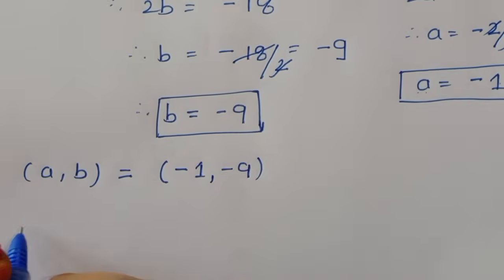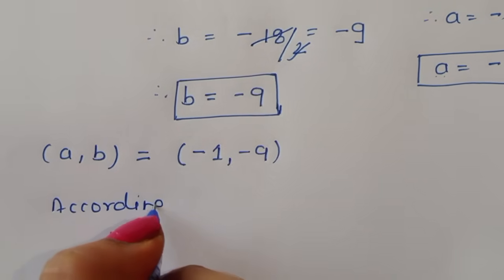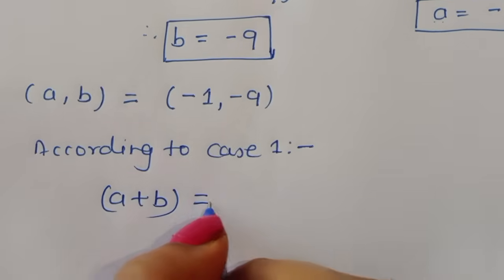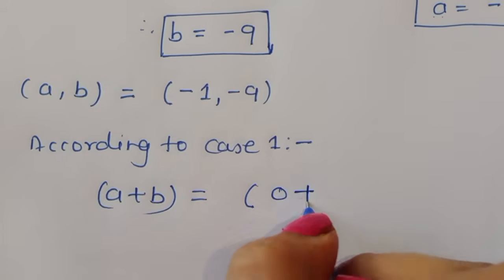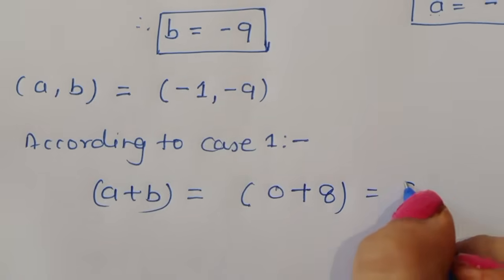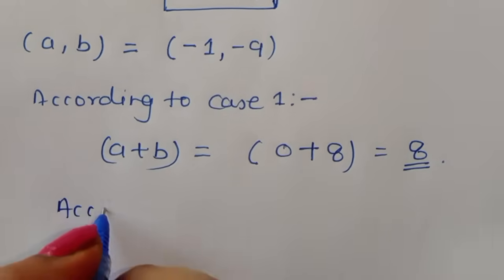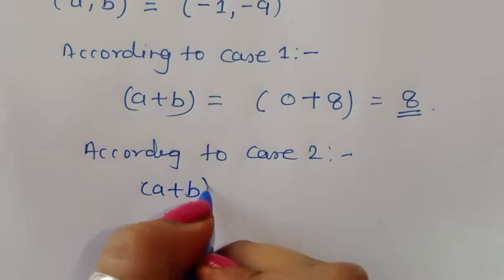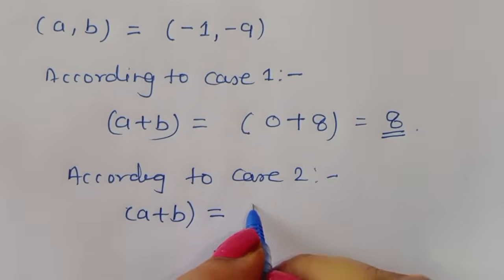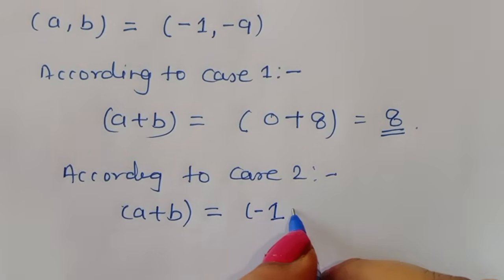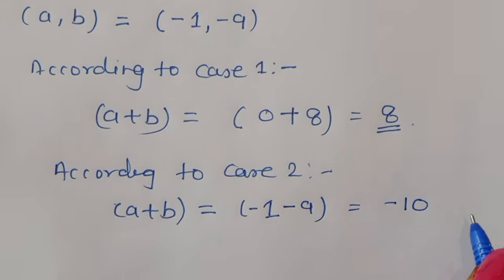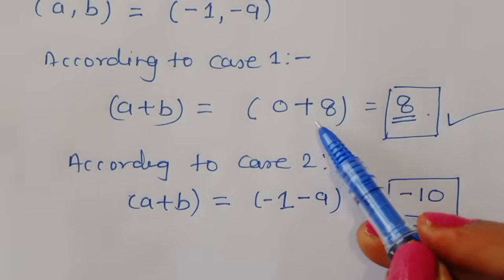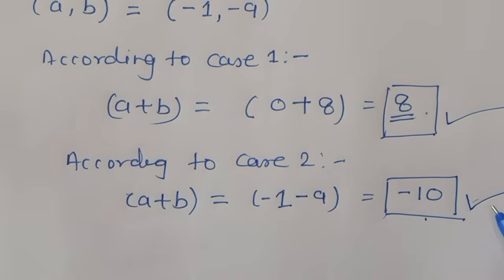Now we find the value of a + b. According to Case 1: a + b = 0 + 8 = 8. According to Case 2: a + b = −1 + (−9) = −10. So from Case 1 the answer is 8, and from Case 2 the answer is −10. Thank you.